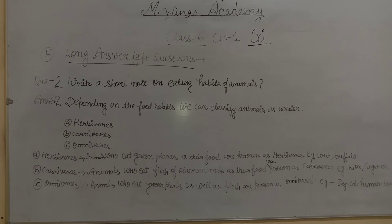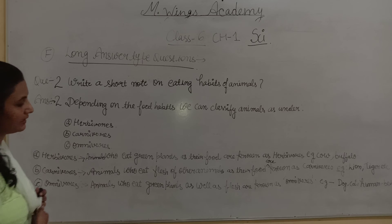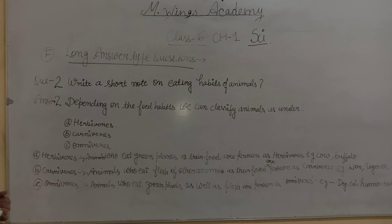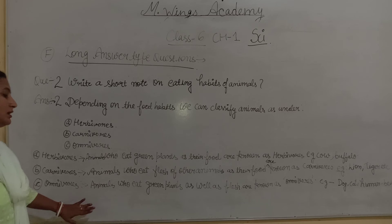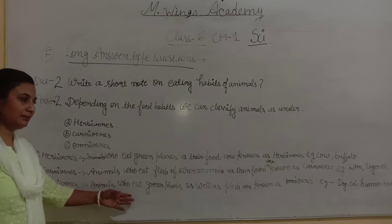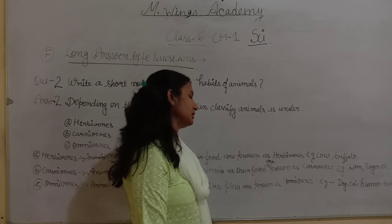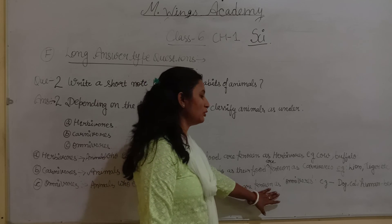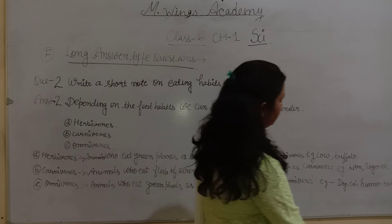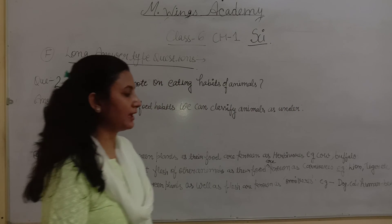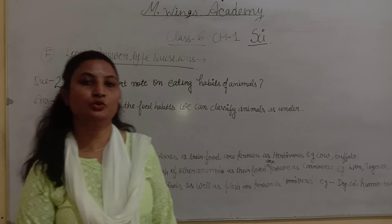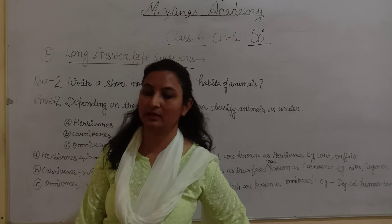Animals who eat green plants as well as flesh are known as omnivorous. Those animals who eat both green plants and flesh are called omnivorous. Examples are dog, cat and human beings — that means us.